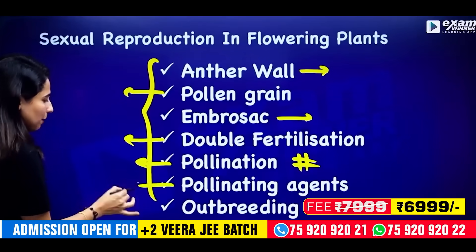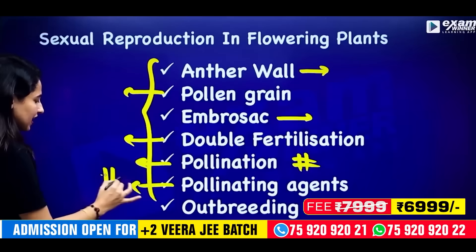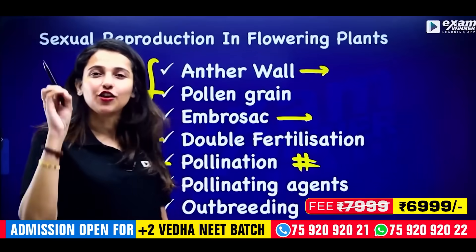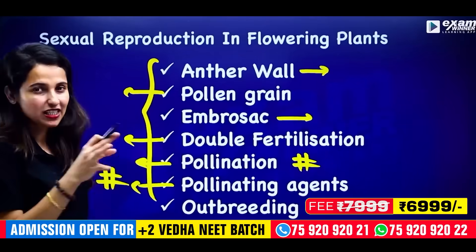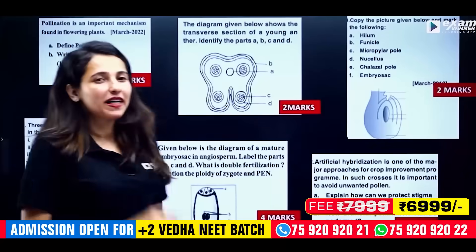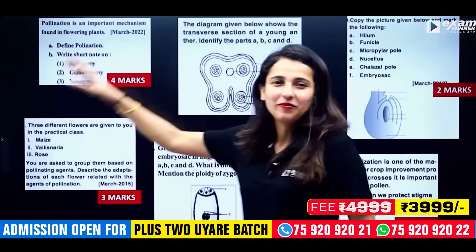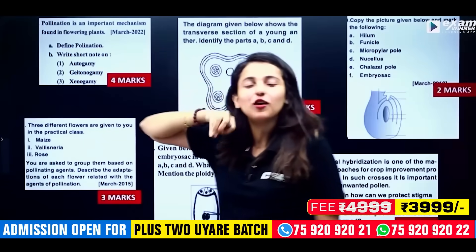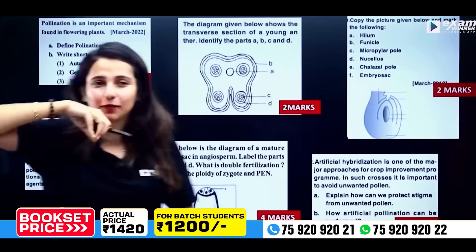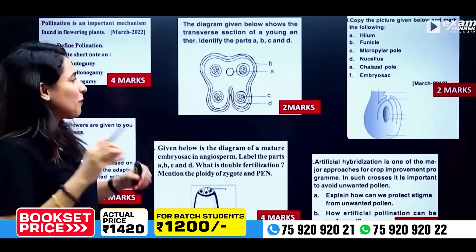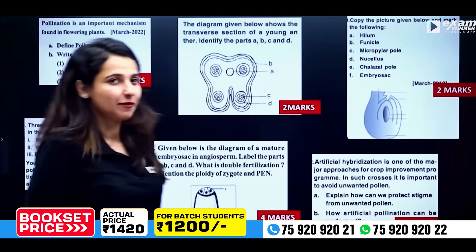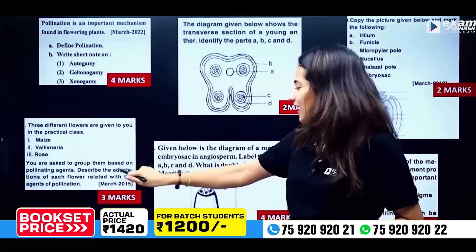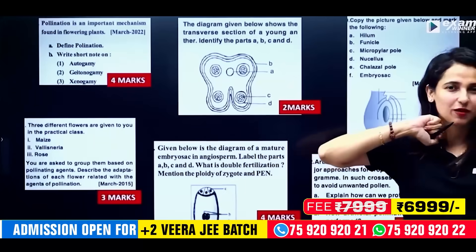This is the pollinating agent. What does the question expect from this area? What is the prediction for pollination? You can expect a question on pollination. We also have pollinating agents — insects, wind, and water. You can expect a 3-mark question on this.